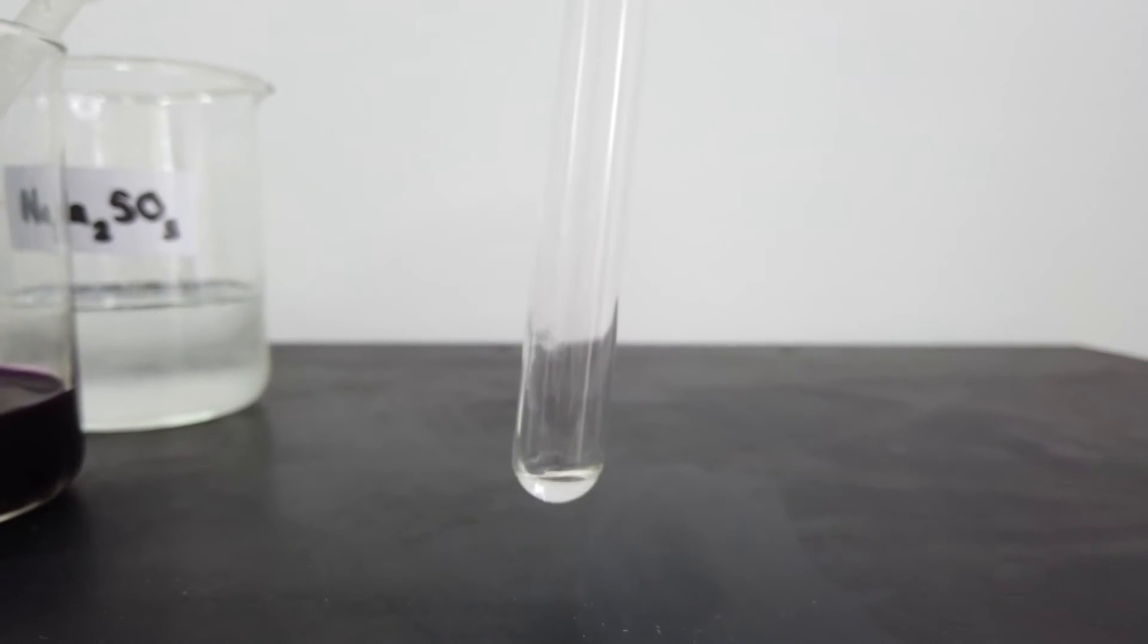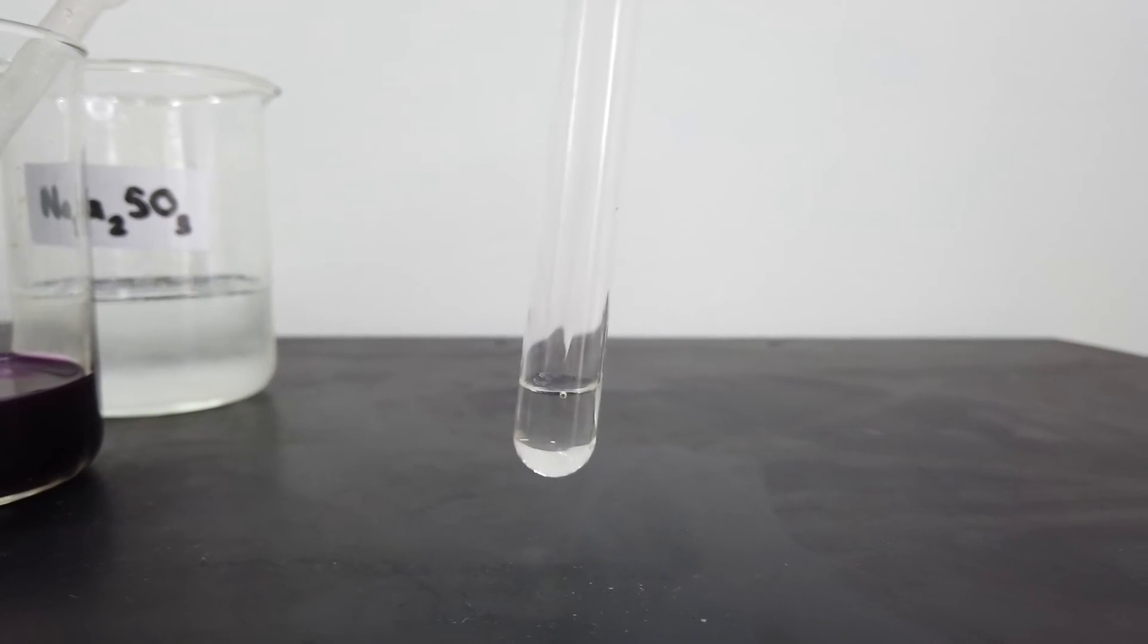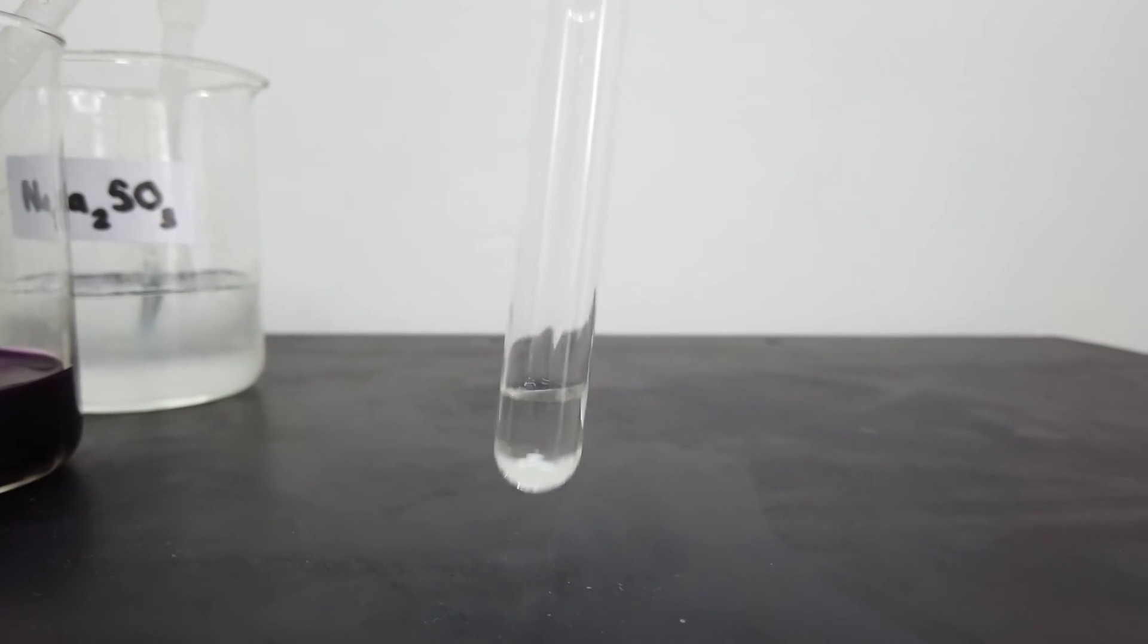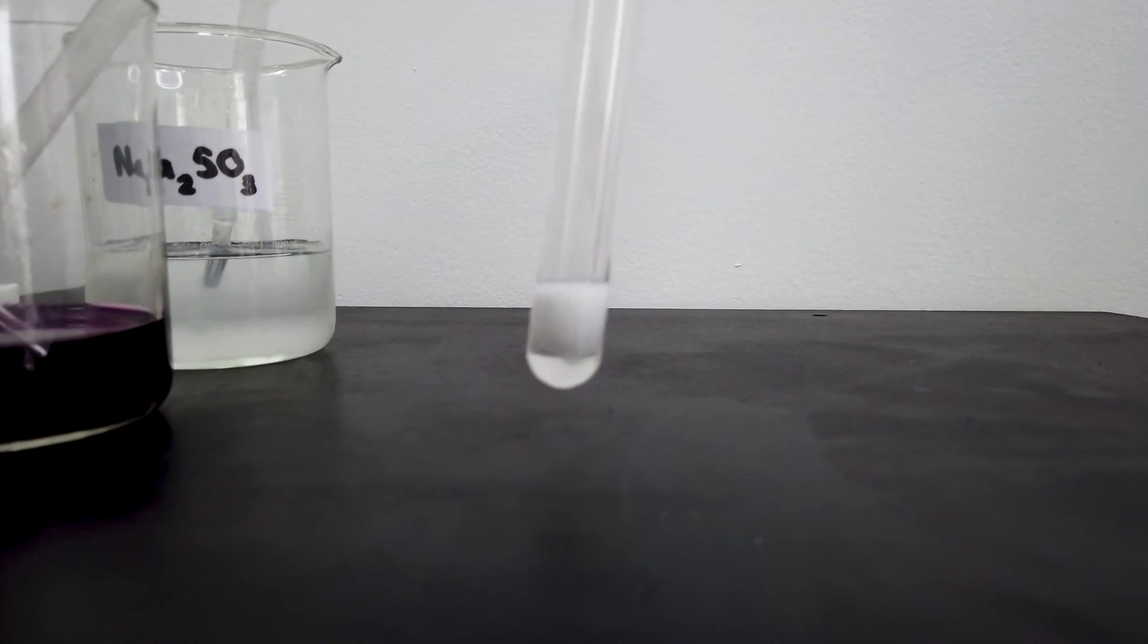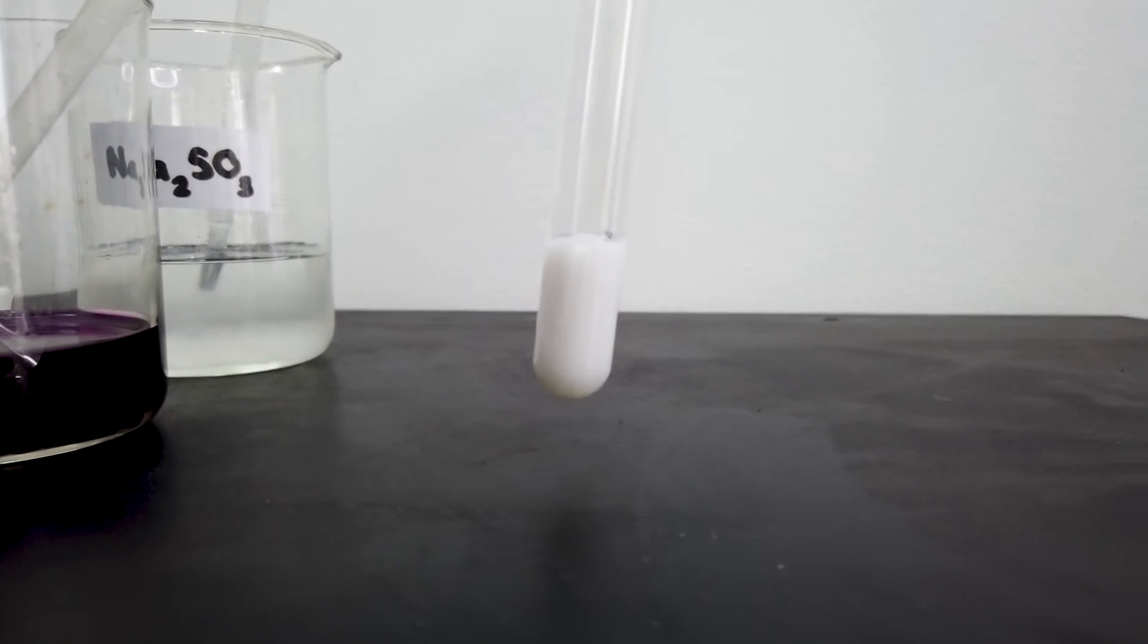Again add 1 cm depth of sulfide ion solution into a test tube. To this add barium ion solution. A white precipitate will form.